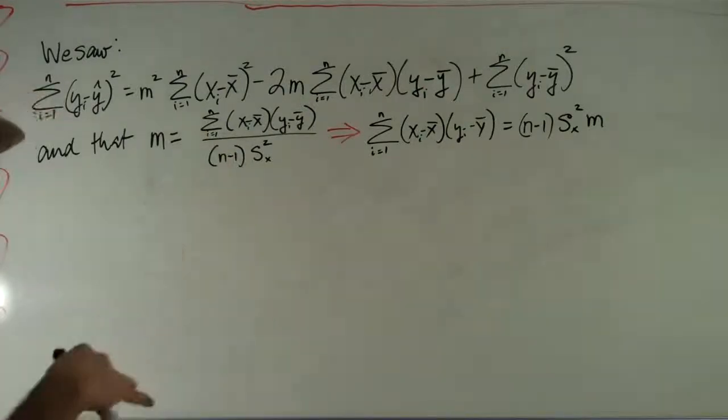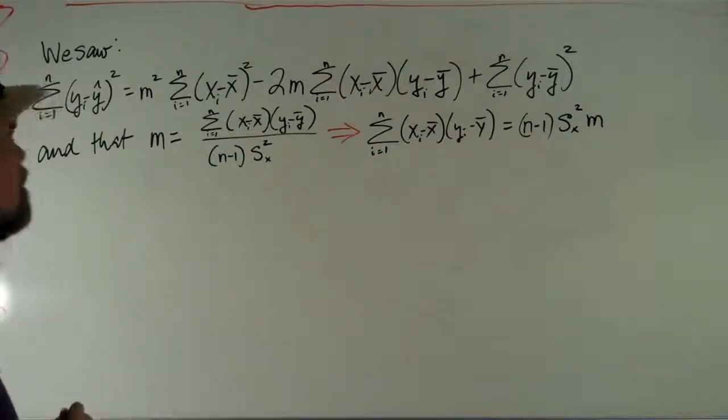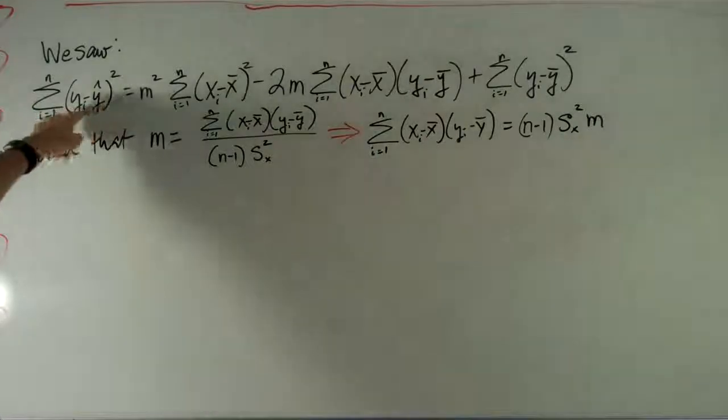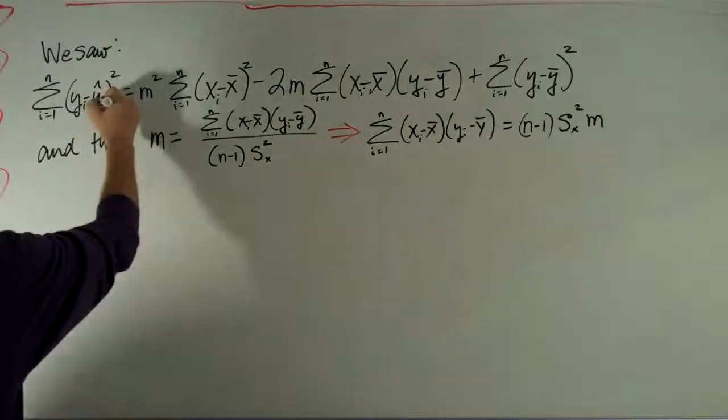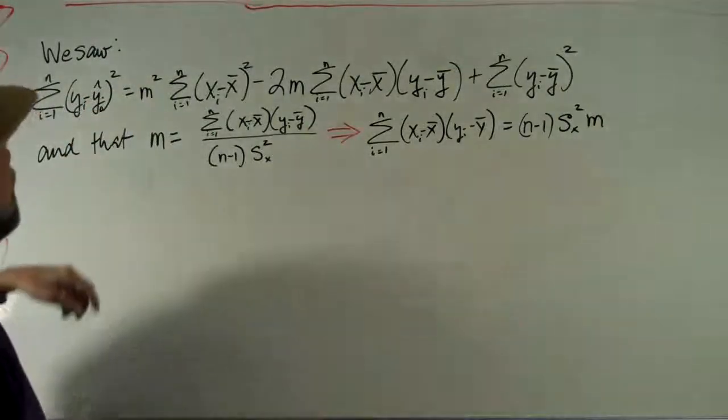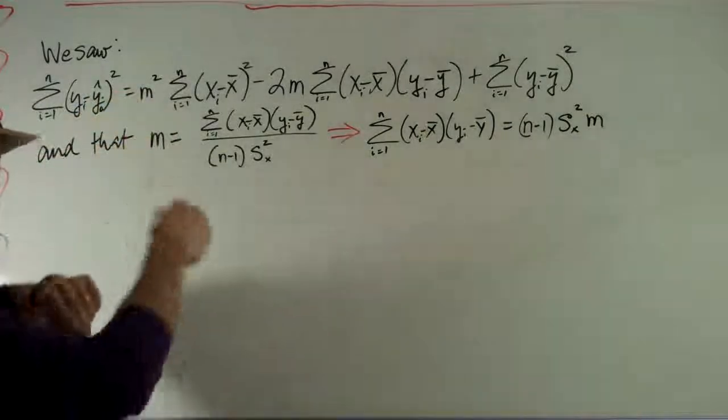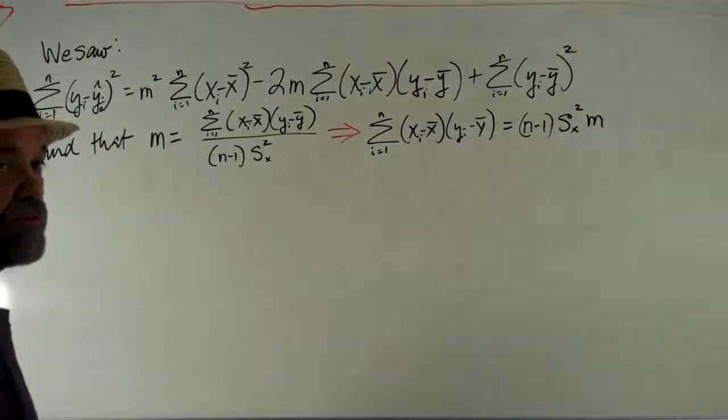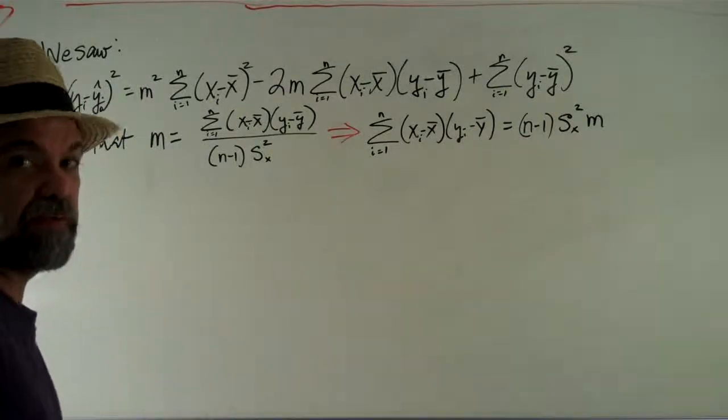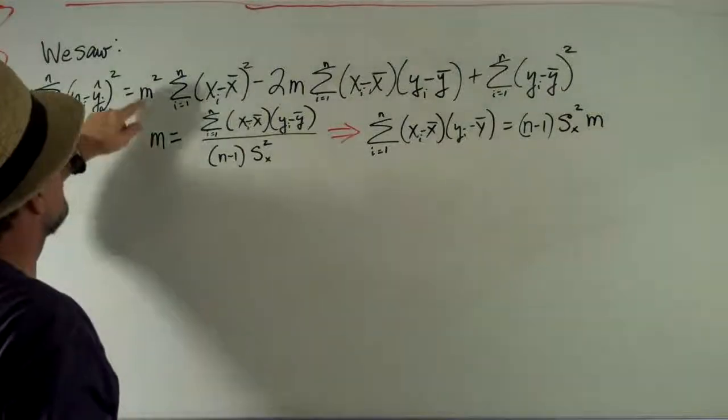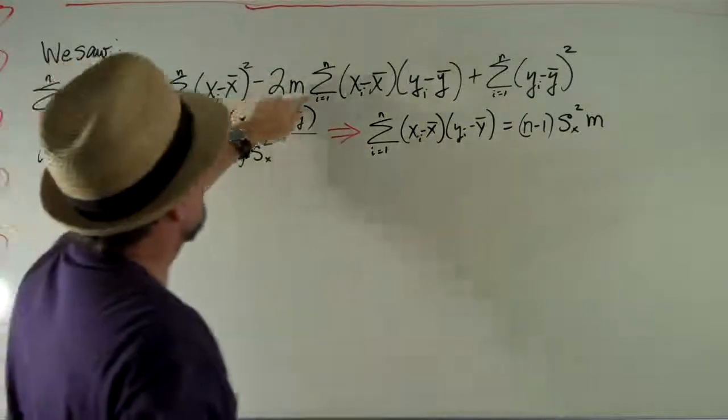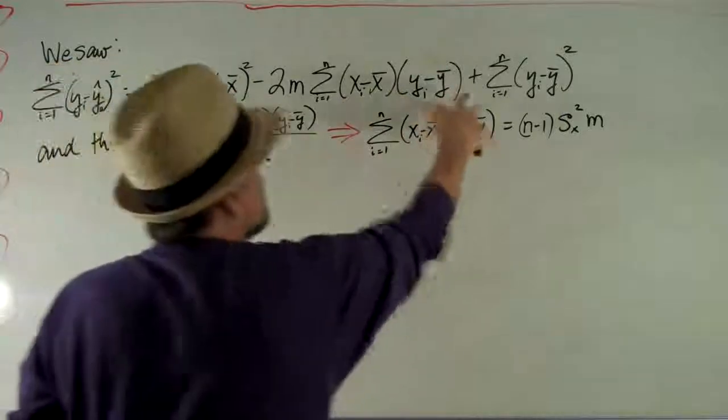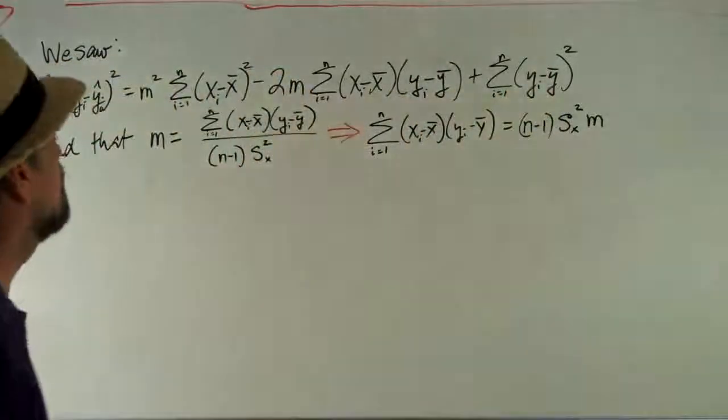In the process of determining the slope and the y-intercept of our least squares regression line, we're looking at the sum of the squares. And we saw that the sum of yi minus y hat i squared, look back in the proof of when we were determining what m was. Oh, by the way, I've switched back to using m again for slope. Sorry about that. We did see that, I swear.